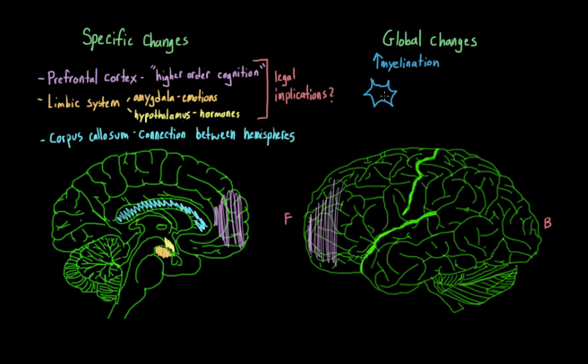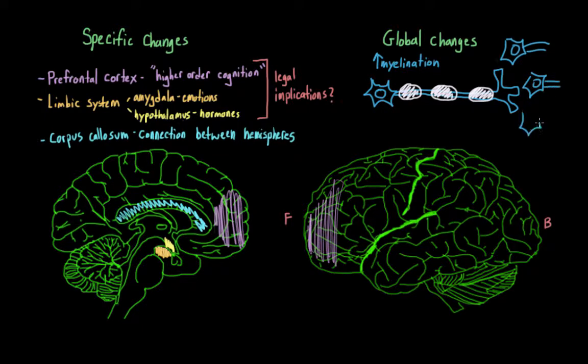To quickly review, this is a neuron. Neurons communicate with each other by sending signals down these long axons. Myelin is a fatty tissue that covers the axons of neurons and helps to increase the speed at which the neurons can communicate. Faster communication between neurons means faster communication between brain areas. This can help explain why adolescents are able to process information faster than children.